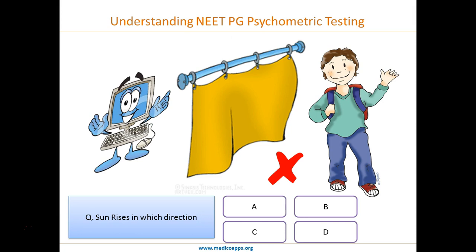So this is what psychometric testing does. The third component of psychometric testing: if a tough question is answered, the computer will give you a grade, but it will always take it with a pinch of salt — you might have got that question correct by guesswork.